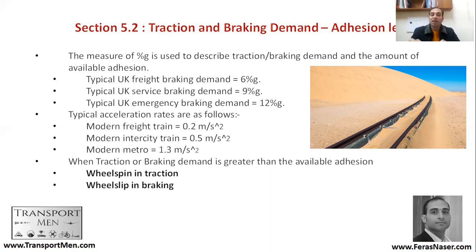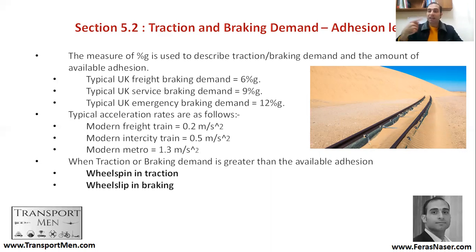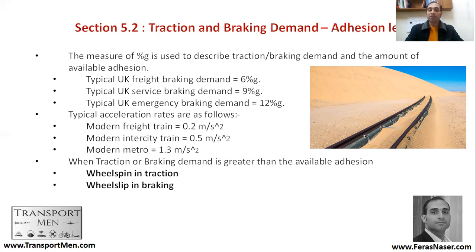When traction or braking demand is greater than the available adhesion, the following will happen: either wheel spin — where the wheel spins around but is not moving forward — or wheel slip, where the wheel is actually slipping on the rail.